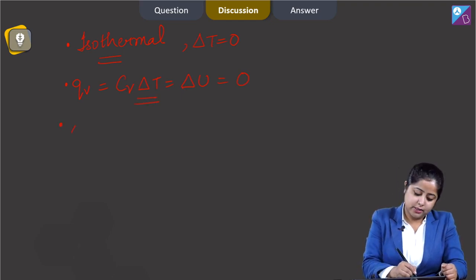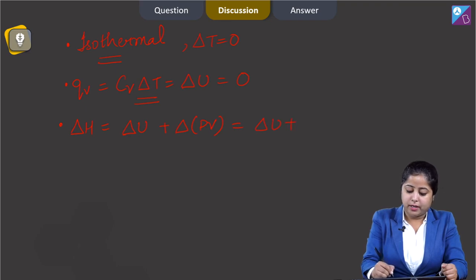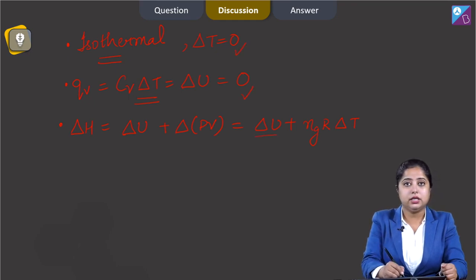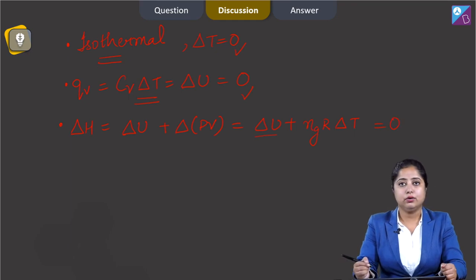Now let us consider ΔH. ΔH = ΔU + Δ(PV) = ΔU + nR·ΔT. Since ΔU = 0 and ΔT = 0, that means ΔH is also 0.